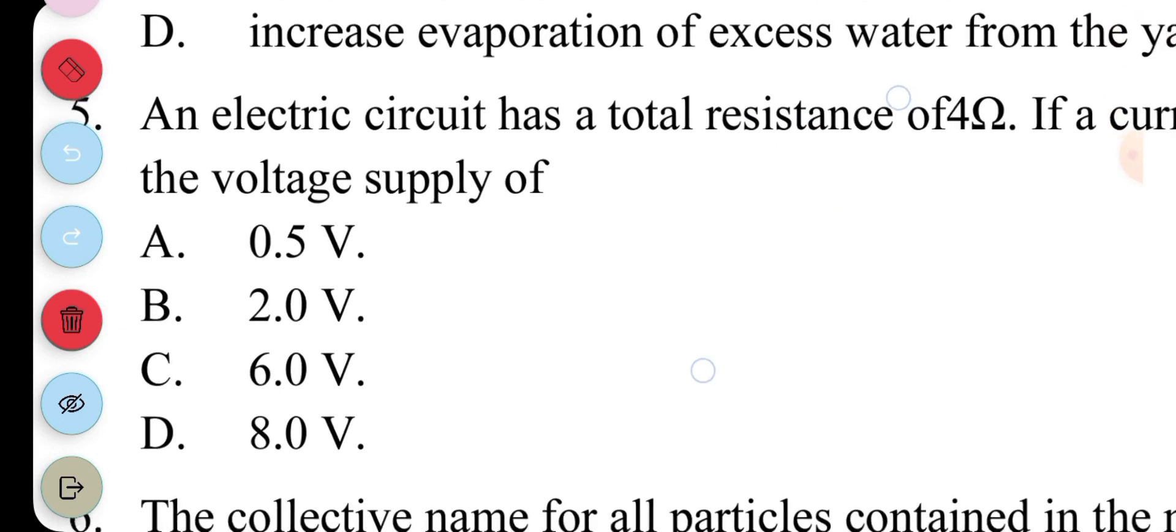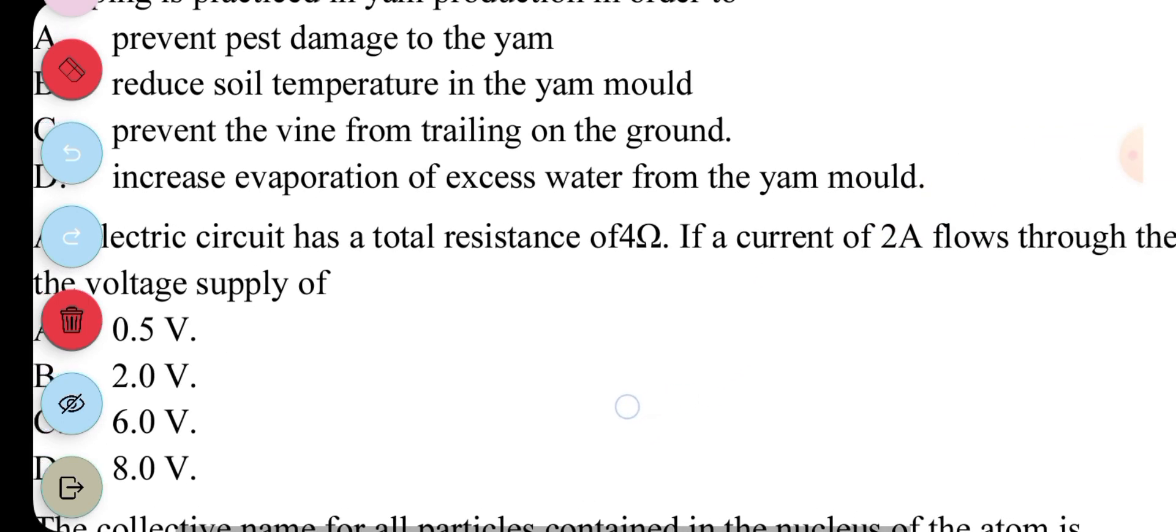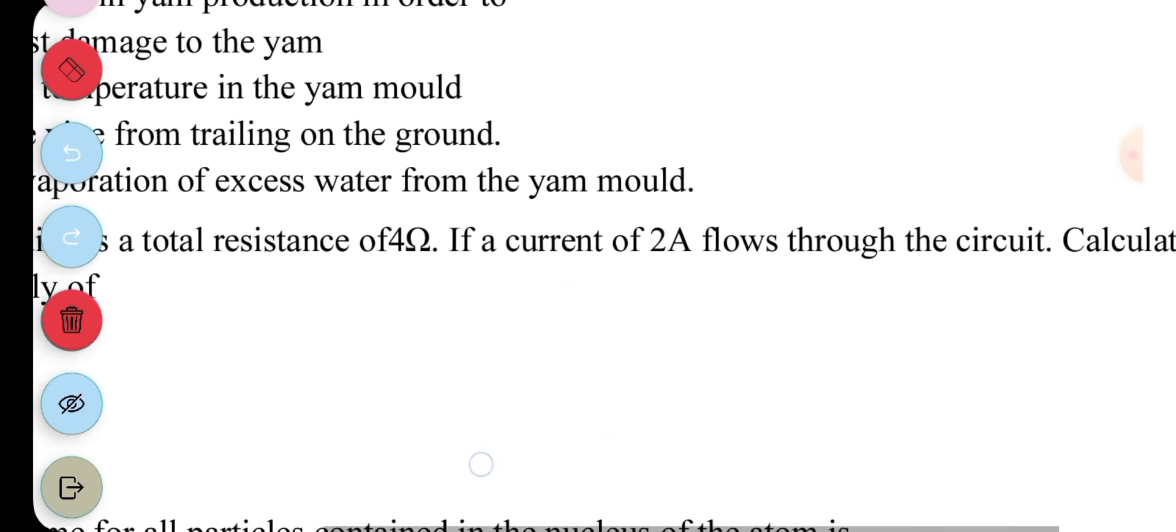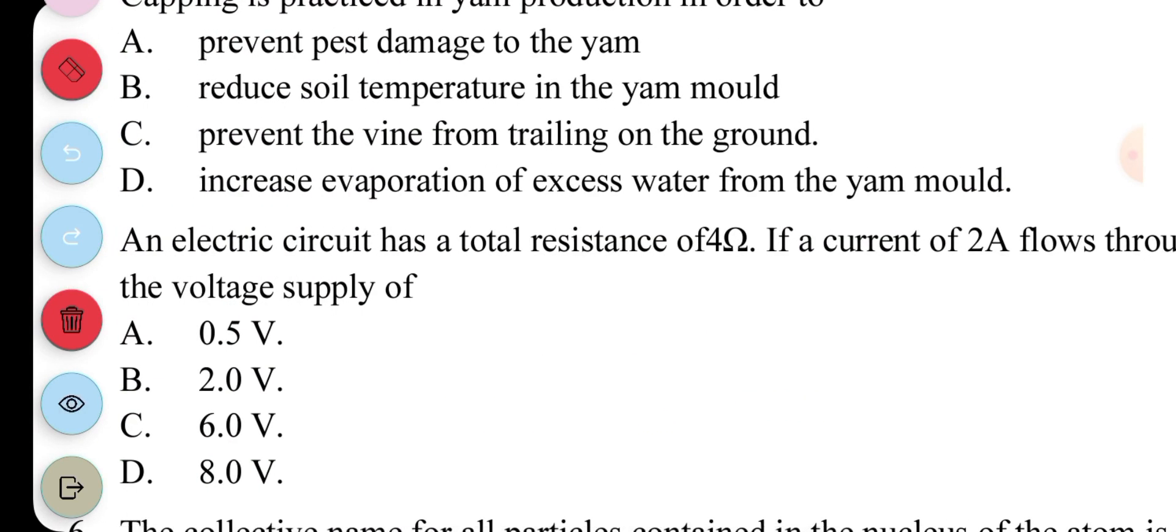Question five, an electric circuit has total resistance of four ohms. If the current is two ampere through the circuit, calculate its voltage. Now this is the formula, V equals IR. This is the resistance, and this is the current. So the I here represents the current, then the R represents the resistance. You are supposed to multiply the four by the two. So you are going to get eight volts. So the answer to this question is D.